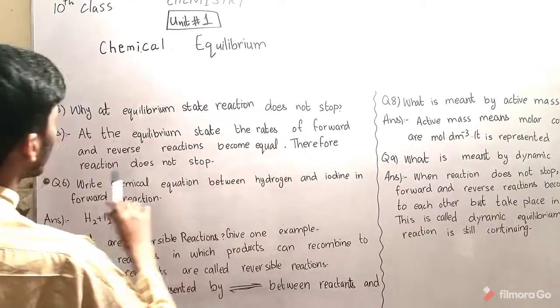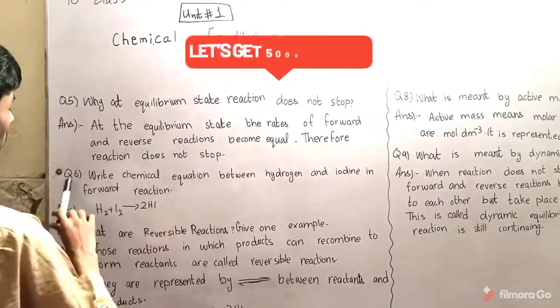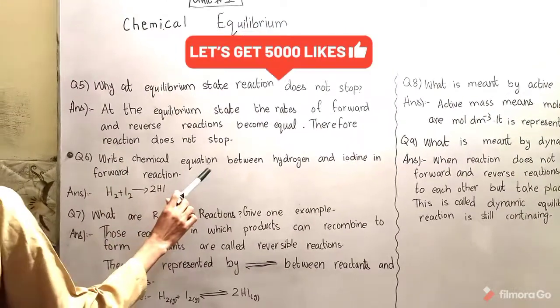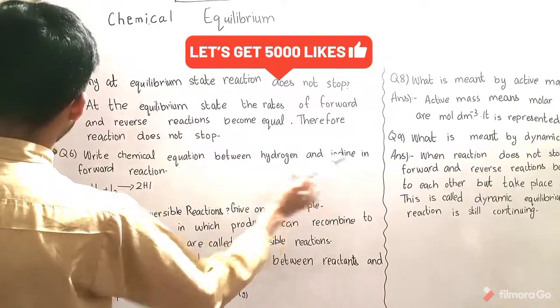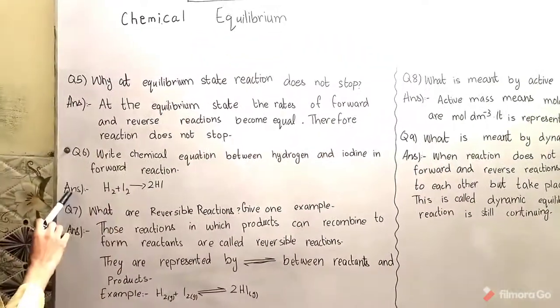Question number six: Write chemical equation between hydrogen and iodine in forward reaction. Answer: H2 plus I2 gives 2HI.